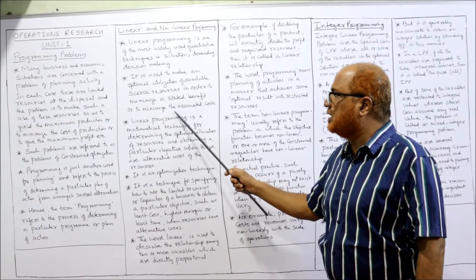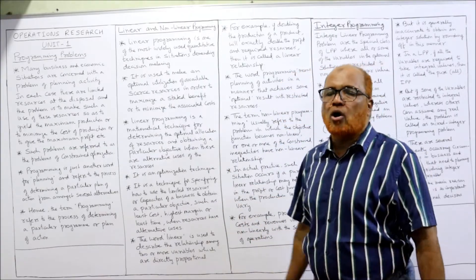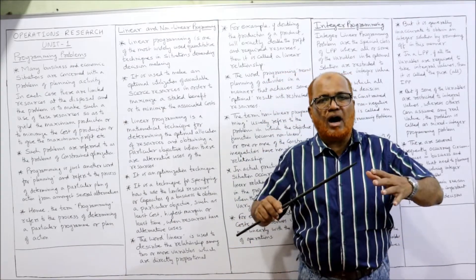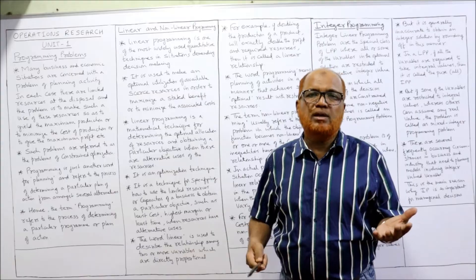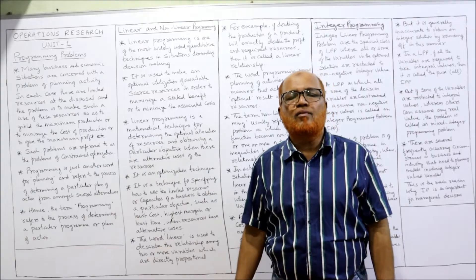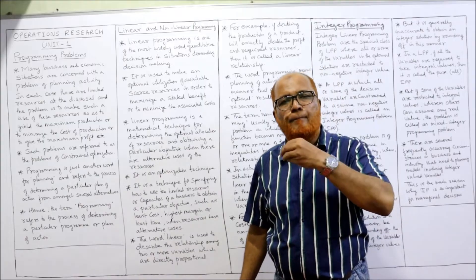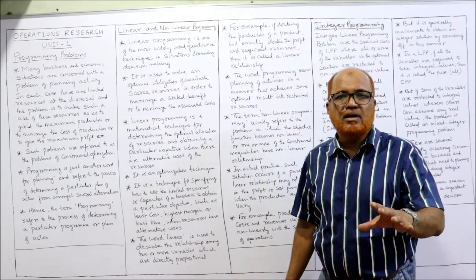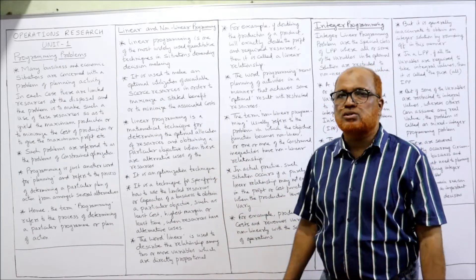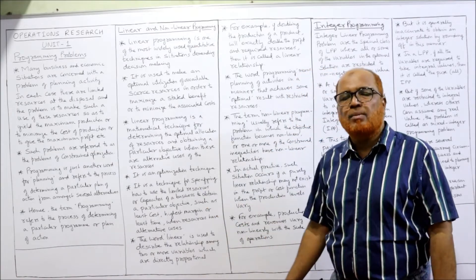Linear programming is used to make optimum utilization of scarce resources in order to maximize the stated benefit or minimize associated cost. If we had unlimited resources, there would be no need for planning or programming. But unfortunately we don't find anywhere in the world where resources are abundant — in every case resources are scarce. The objective may be maximizing profit or minimizing cost.